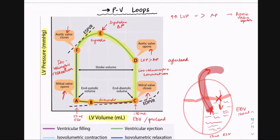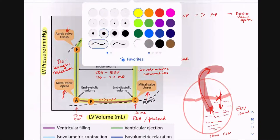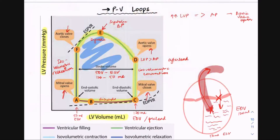Stroke volume is the difference between end diastolic volume minus end systolic volume — in this case 120 minus 50 ml. The area under the PV loop curve is our stroke work.